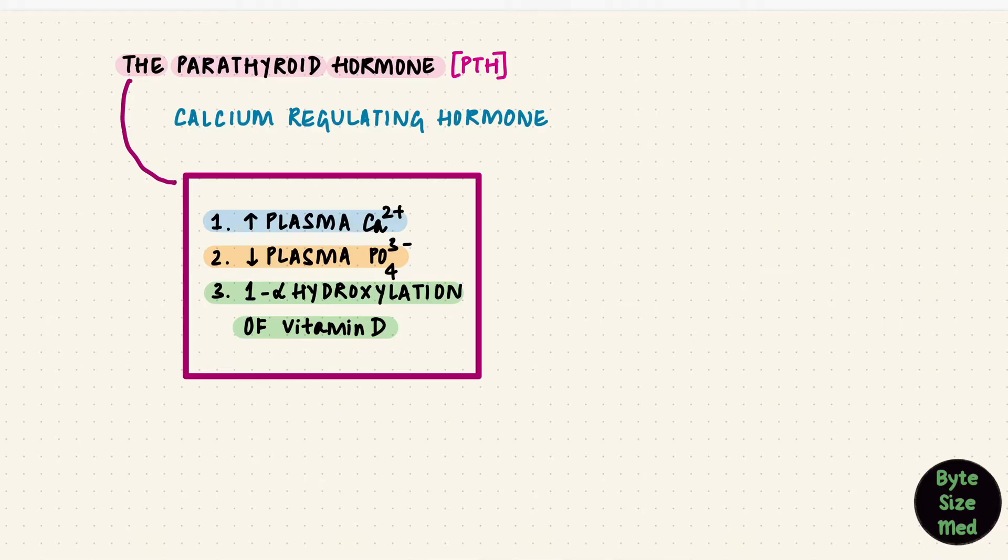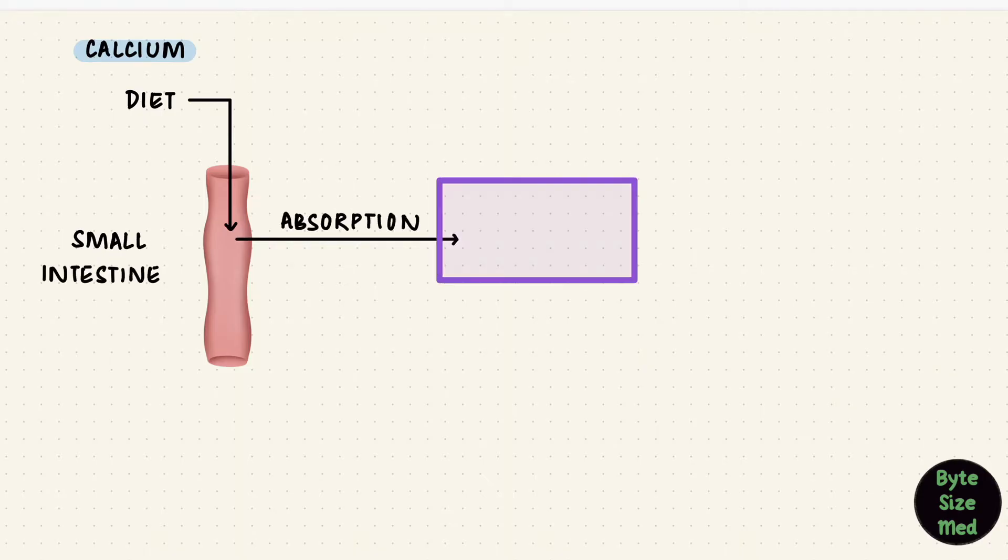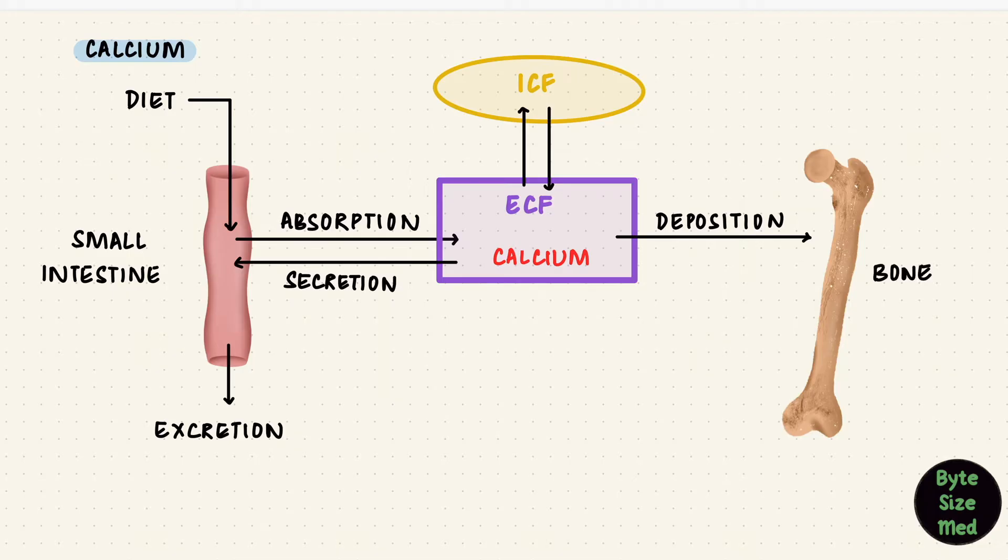To understand how PTH regulates calcium, first we need to know what happens to calcium in the body. I'm going to quickly go over that now. We get calcium through diet. It reaches the small intestine where it gets absorbed and reaches the extracellular fluid. Calcium also gets secreted in GI fluids back into the intestine. Most calcium is excreted by the GI system. The calcium in the extracellular fluid can exchange with cells. Calcium gets deposited in bones, and those bones form a reservoir.